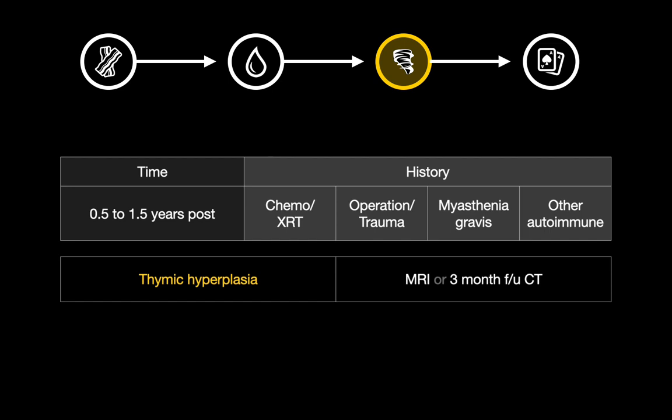Step three: if your anterior mediastinal mass has no fluid, step aside and think — is there any possibility this could be thymic hyperplasia presenting as a mass? That requires you to think about whether the patient has seen chemotherapy or radiation therapy, some sort of trauma in the last year or so, or whether they have myasthenia gravis, lupus, rheumatoid arthritis, or Graves' disease. In those settings, you have to consider the real possibility of thymic hyperplasia presenting as a mass. There are MR imaging sequences that can help rule in a thymic hyperplasia case.